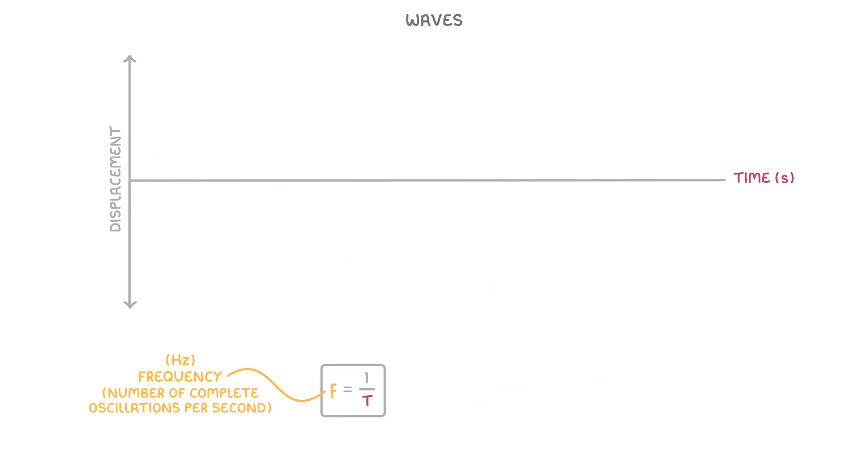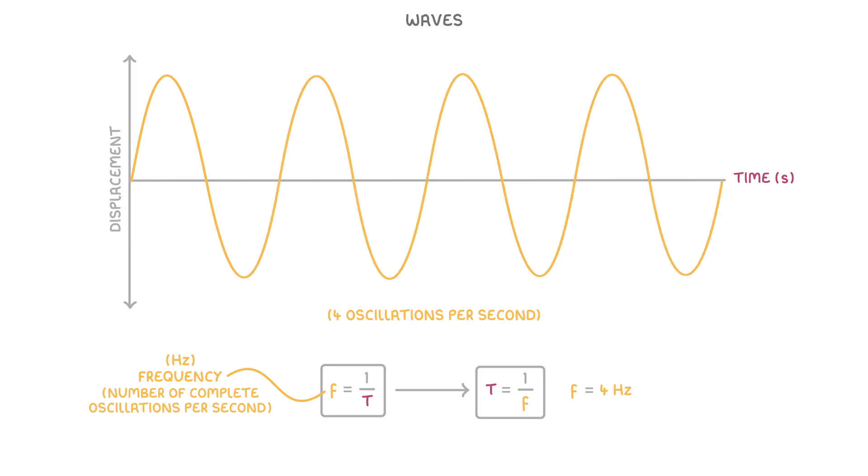We can also use the equation the other way around. So time period equals 1 over frequency. So if we were told that the frequency of a wave was 4 hertz, which means 4 oscillations per second, then to find the time period, we'd just do 1 divided by 4, which tells us that each oscillation must be 0.25 seconds.